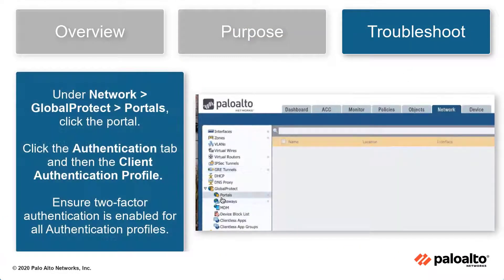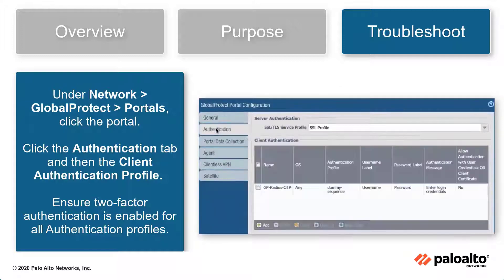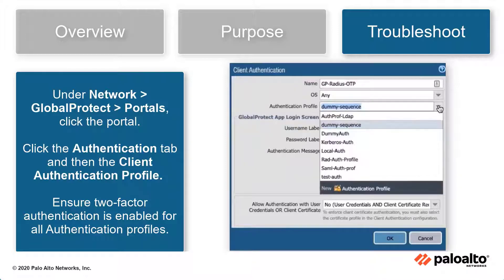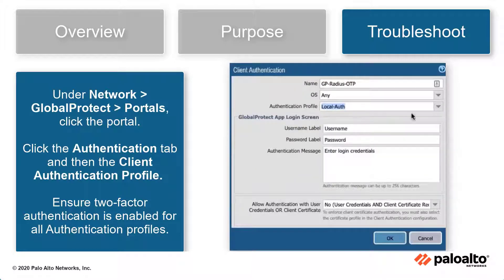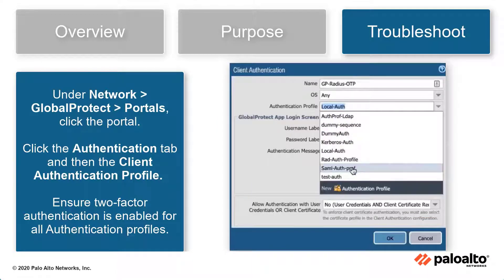Under Network, GlobalProtect, Portals, click the GlobalProtect portal, select the Authentication tab, then click on Client Authentication Profile. You have multiple authentication profiles to choose from, including Kerberos, RADIUS, SAML, and more. Ensure two-factor authentication is enabled for client authentication to pass the best practice check.